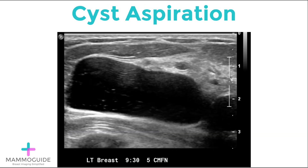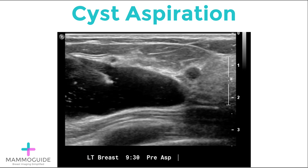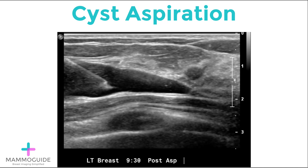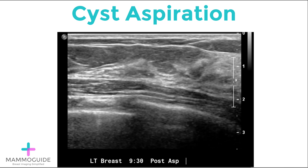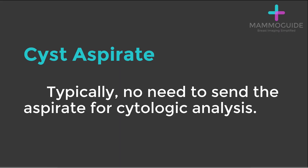First, find the cyst using the ultrasound probe. Clean the overlying skin with an alcohol swab. Next, using the needle, gain access into the cyst. Have your assistant pull back on the syringe, aspirating the fluid. Aspirate until resolution. Take a post-aspiration image to document what you've done. Usually there's no need to send the aspirate for cytologic analysis, as you are performing the aspiration simply to confirm a diagnostic suspicion or for symptomatic relief.